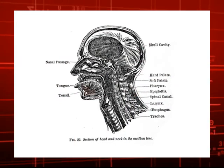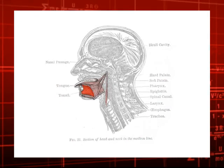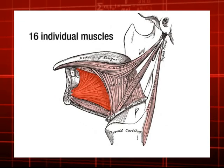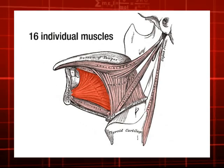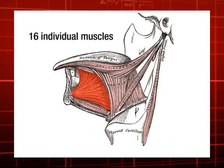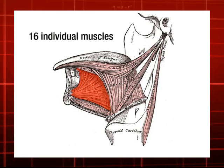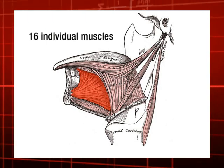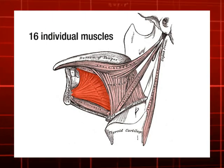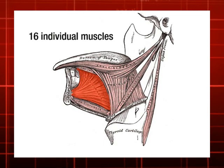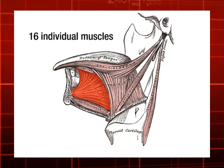The tongue is the most complex muscle system in the human body. It consists of 16 individual and distinct contractive sets of fibers. These fibers run in widely varying directions, weaving through each other like threads of cloth.